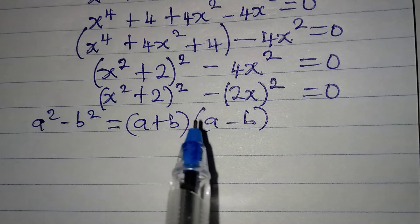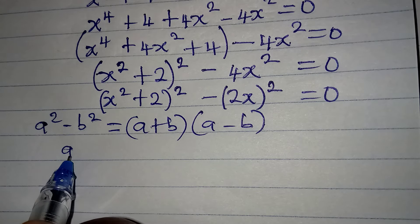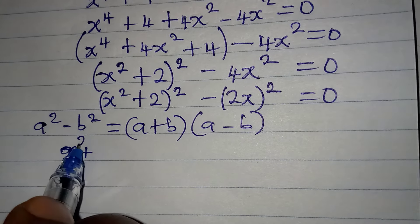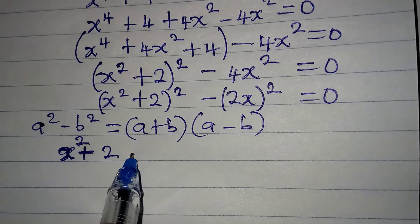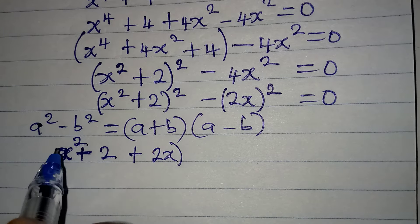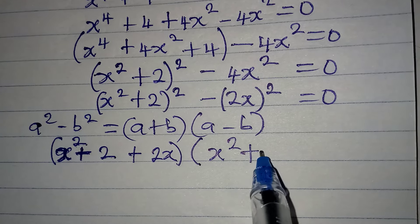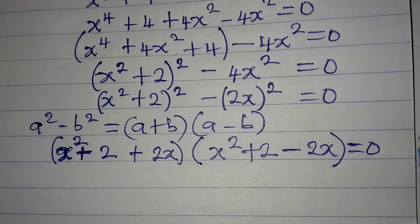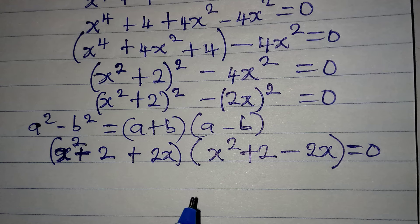I'm going to apply this same formula. In place of a, I'm going to have x squared plus 2, then plus 2x, close this bracket. In the other bracket I will have x squared plus 2, then minus 2x, both of them equal to zero.